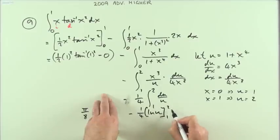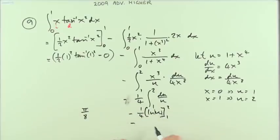Evaluated from 1 to 2. Here I should maybe put that in, so that's just going to be minus 1 quarter of ln 2 minus ln 1, which as before is 1 quarter of ln 2. So I've got pi upon 8 minus 1 quarter of ln 2 as before.